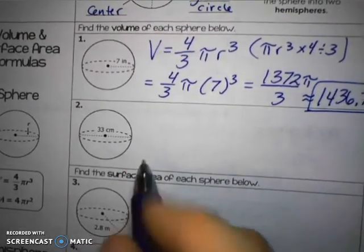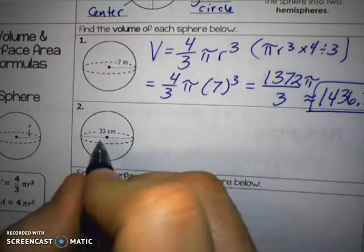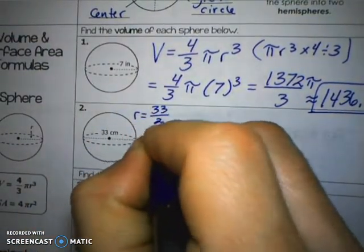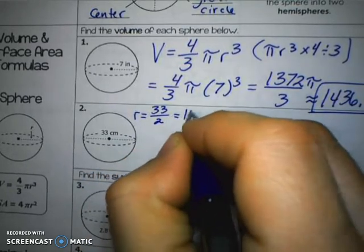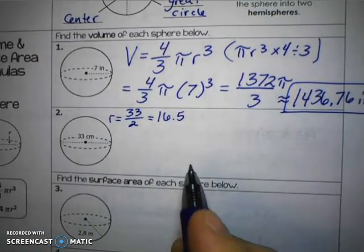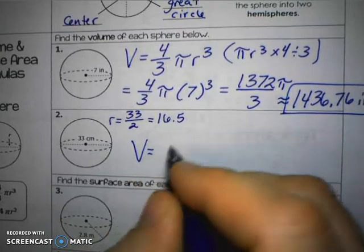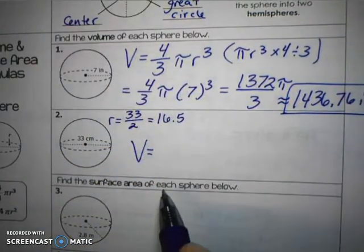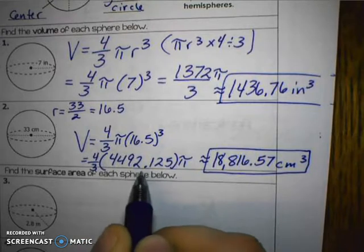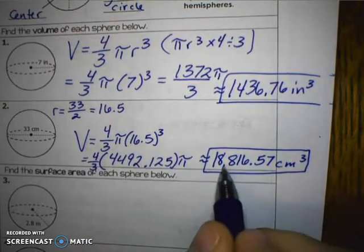Pause the video to try number 2 the same way we did the previous problem. But instead of using 33 directly, note that 33 is the diameter, so you want to use a radius of half of 33, which is 16.5. When I do 16.5 to the third power, that part alone is 4,492.125. Then multiply by 4, divide by 3, and multiply by π to get the answer.